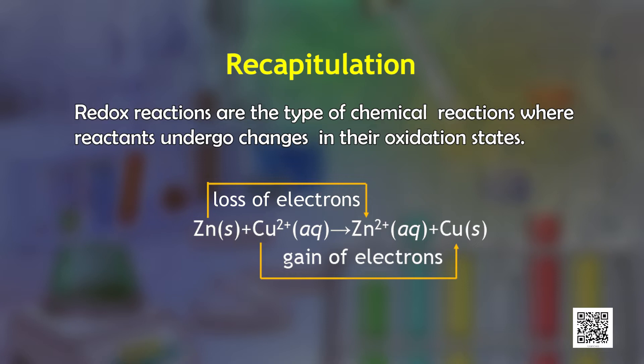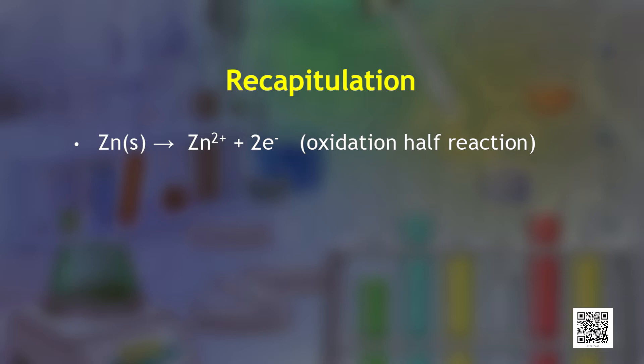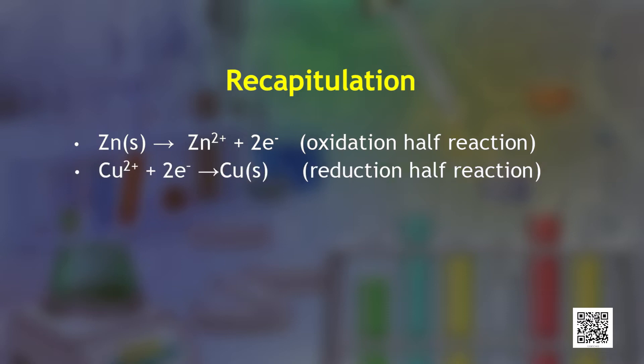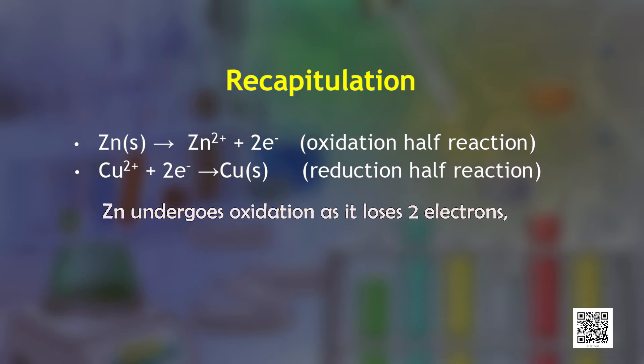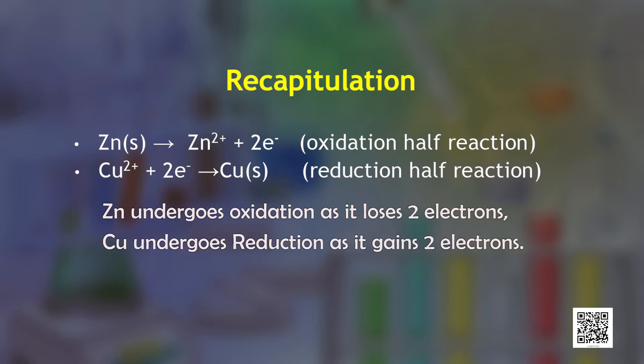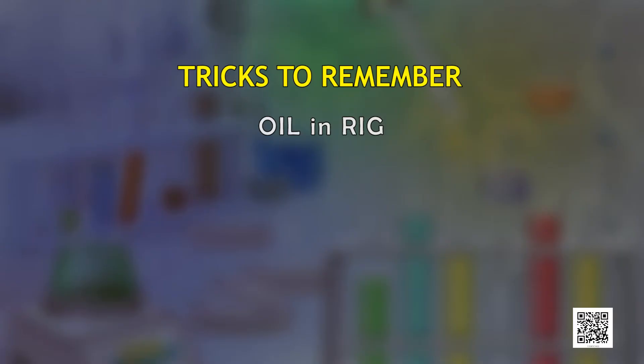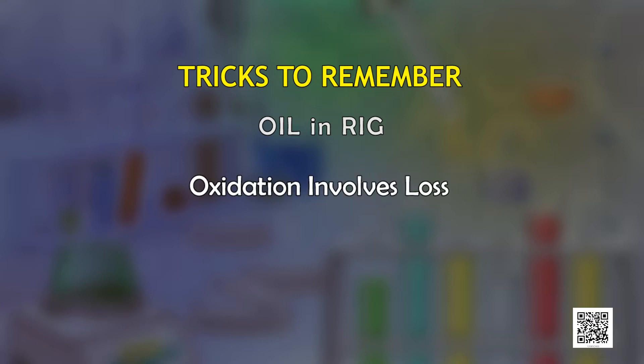This reaction is a combination of two half reactions whose addition gives the overall cell reaction: Zn → Zn²⁺ with the loss of two electrons, and Cu²⁺ gaining those two electrons to give copper. Zn undergoes oxidation as it loses two electrons, while copper undergoes reduction as it gains two electrons. Since the electron exchange occurs simultaneously, it is considered a redox reaction. Remember this with the trick OIL RIG — oxidation is loss of electrons and reduction is gain of electrons.